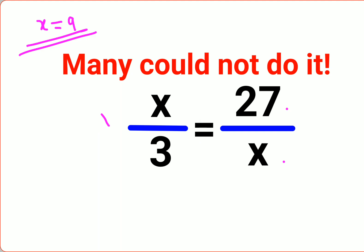So basically what happens in cross multiplication is this x goes and gets multiplied to the x in the numerator, so x into x equals 27 into 3. We get x squared equals 27 into 3, which gives you 81.